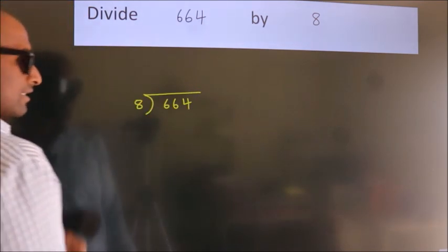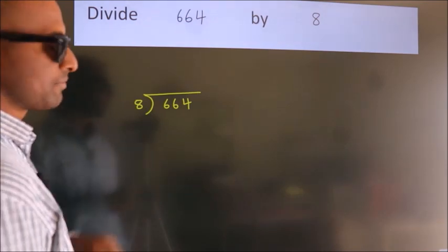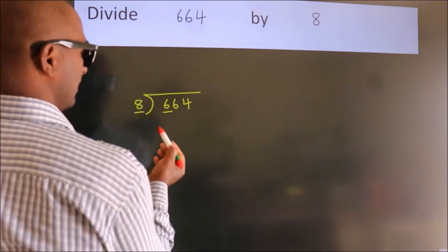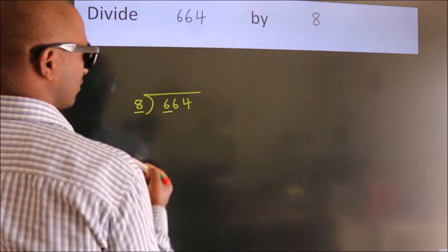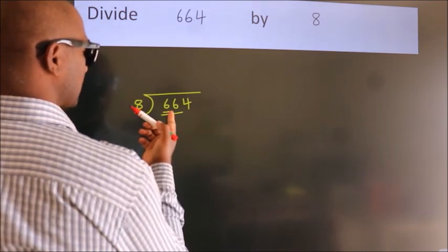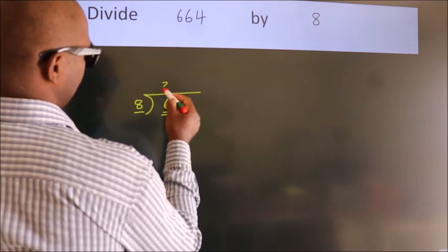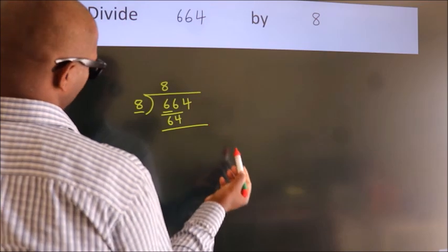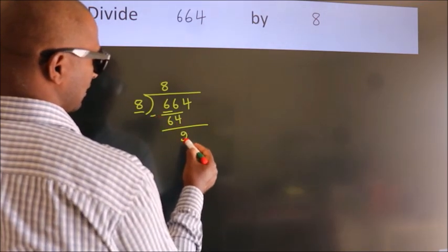This is your step 1. Here we have 6, and here 8. 6 is smaller than 8, so we should take 2 numbers: 66. A number close to 66 in the 8 times table is 8 × 8 = 64. Now we subtract, and we get 2.